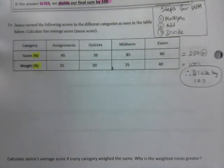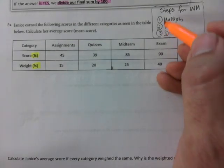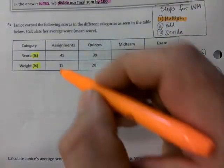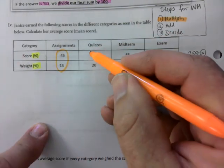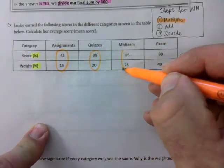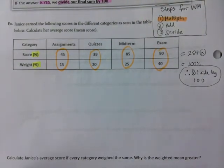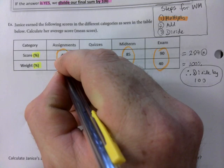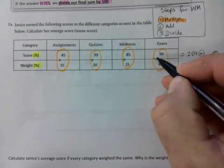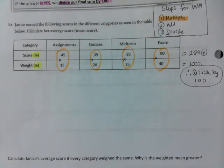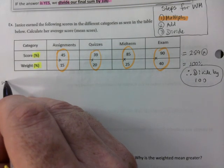So the first step is multiply. So what we do is we multiply across categories like this. So I don't know, I'm going to go multiply like this. Let's go ahead and show that.